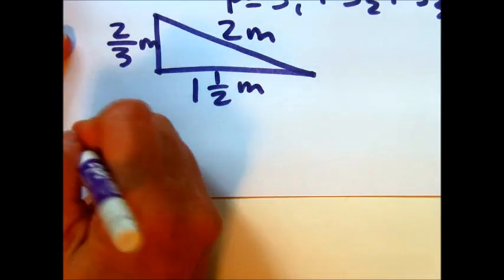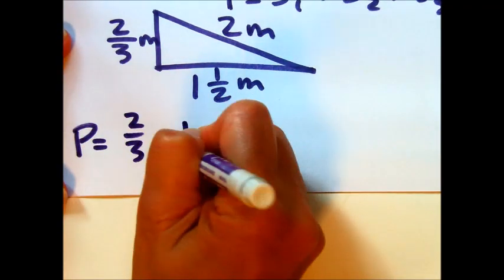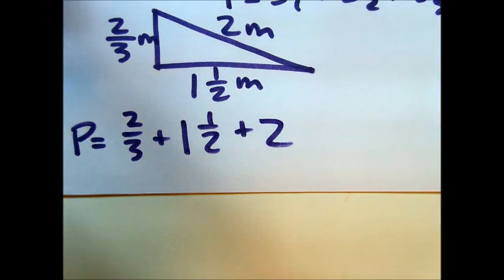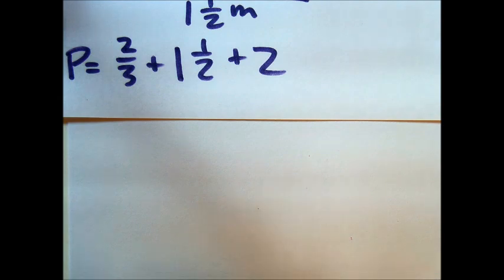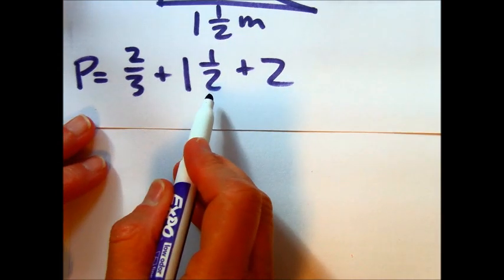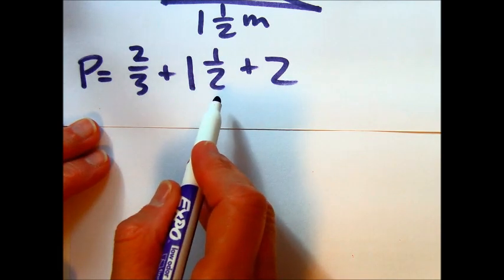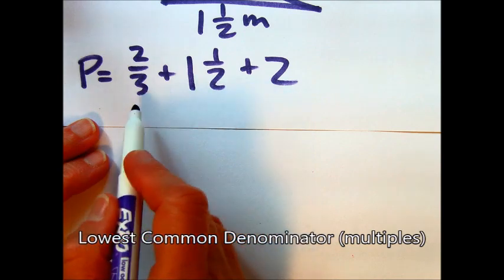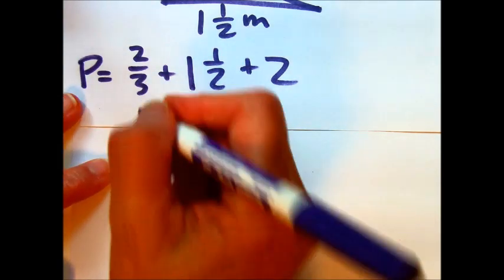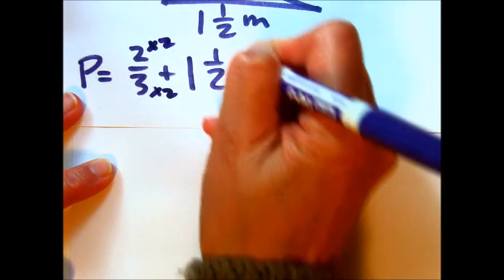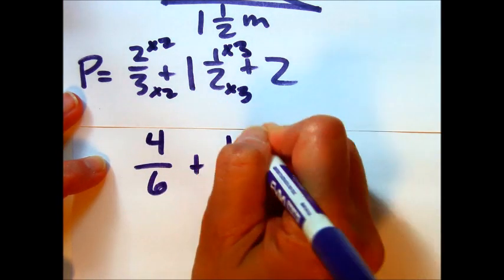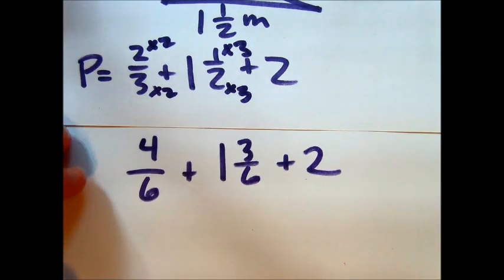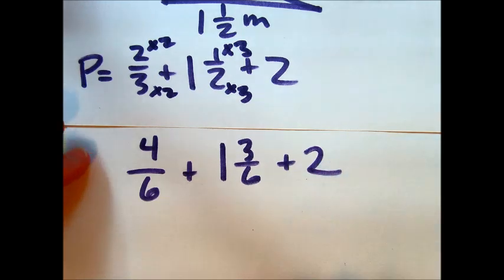So we're just going to add them up: 2/3 plus 1 1/2 plus 2. Notice I have a third and a half, so I need to change them so I have a common denominator. We're going to make this into sixths. So I'm going to multiply by 2, and I'm going to multiply this one by 3. So 4/6 plus 1 3/6 plus 2. I don't need to convert that 2 into a fraction. I'll rewrite this as a vertical problem: 4/6, 1 3/6, and then 2.